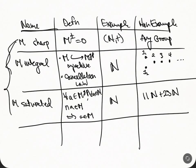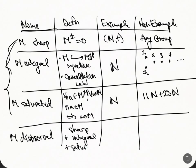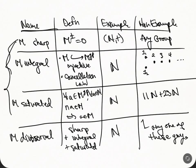Combining these gives something called divisorial. Divisorial means sharp plus integral plus saturated. An example is the natural numbers. A non-example is any one of the previous examples, since one fails to be saturated, another fails to be integral, and another fails to be sharp — and we need all three for divisorial.